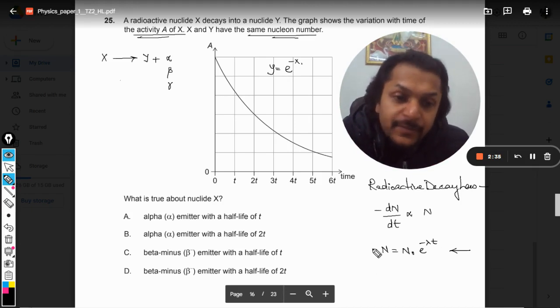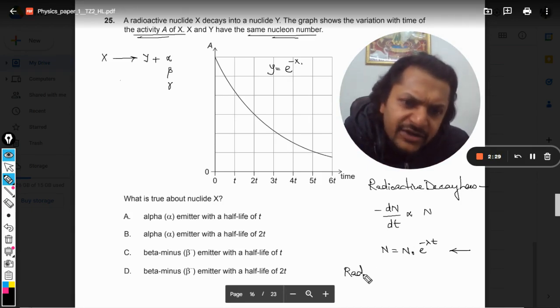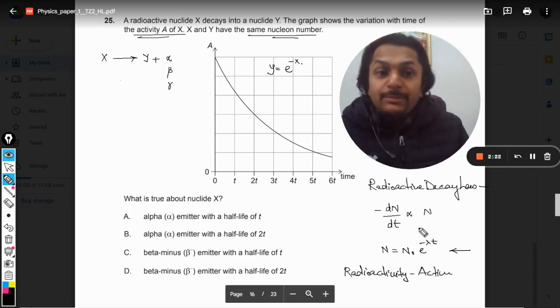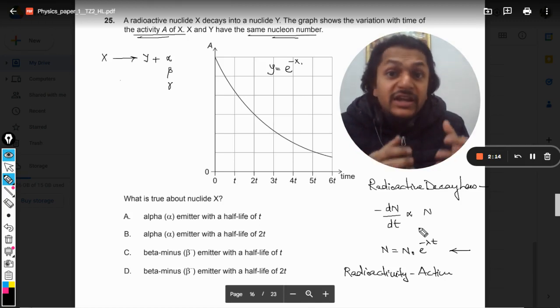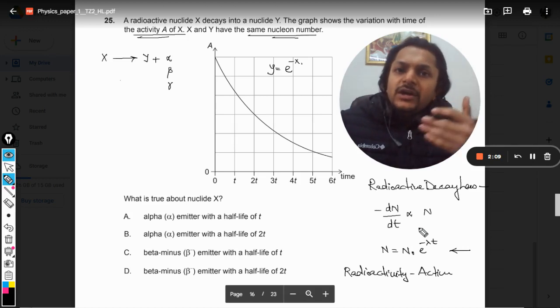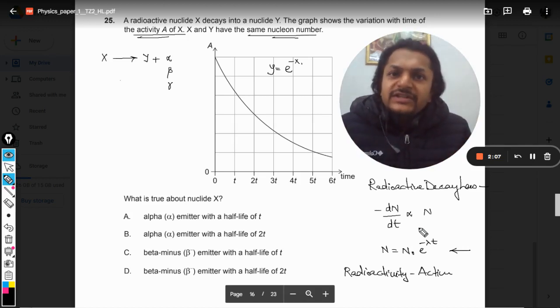Now this is called the number of nuclei left, but there is something called radioactivity or activity of the sample. Some samples are really active so the disintegration is happening at a very fast rate, and some samples are very slow. We say that the activity is very low or high.